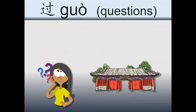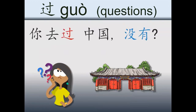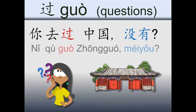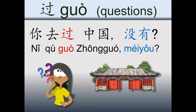What about the questions? 你去过中国没有 — You went to China, didn't you? The point here is we are asking if a person has gone or not to China.